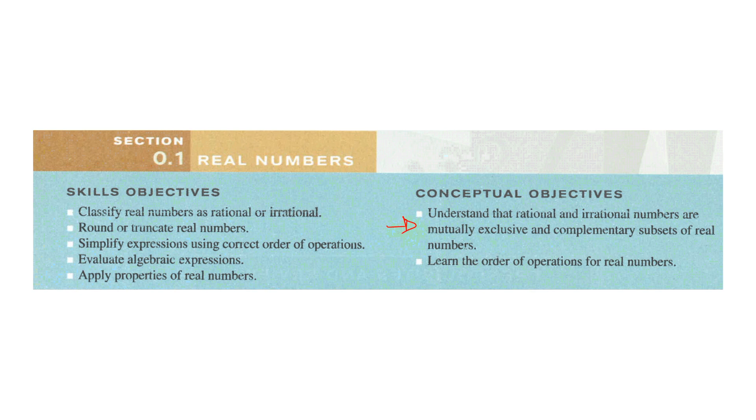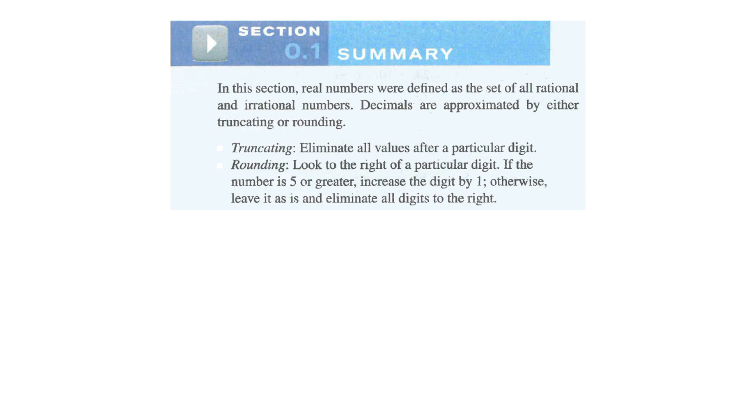Let's understand that rational and irrational numbers are mutually exclusive. That means that something can't be both at the same time, and complementary subsets. That means the two of them add up to everything of real numbers, and then we need to review and learn the properties of the order of operations for real numbers.